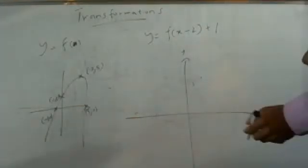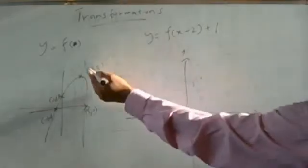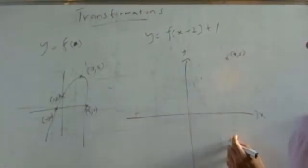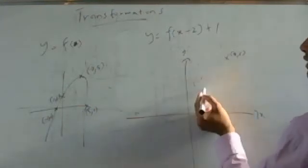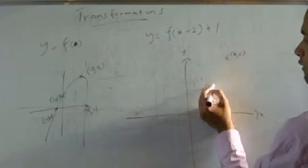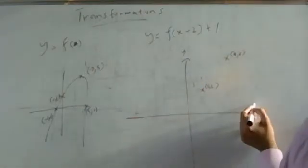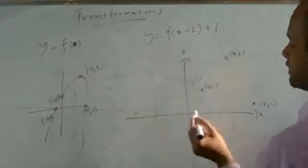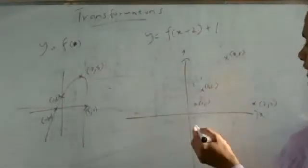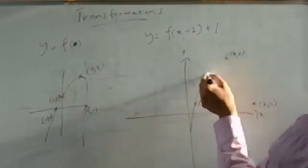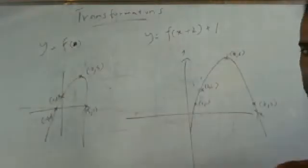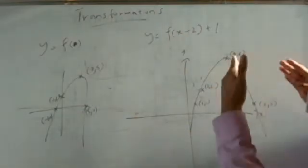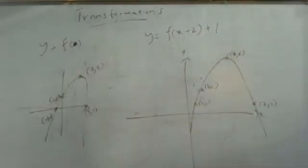So let me work out the new coordinates. The point 2, 5 becomes: add 2 to the x-coordinate making it 4, and go up 1, so that's 4, 6. The point 0, 1 goes 2 to the right, so that becomes 2, 2. The point 5, 0 becomes 7, 1. And minus 1, 0 becomes 1, 1. You can see the graph has changed — it's going to the right two units and up one unit. This is what you call a transformation — in particular, this is a translation of two units to the right and one unit up.